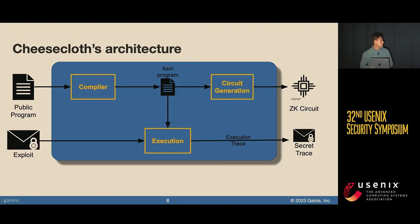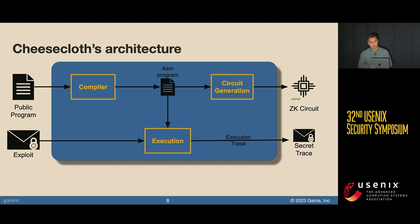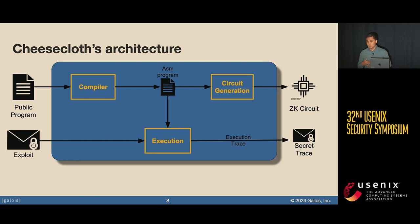Here's the high-level architecture of Cheesecloth. On the left we take as input a public program and a secret exploit or payload that triggers the vulnerability. We compile the program to an assembly representation we call micro RAM, then compile that into a zero-knowledge circuit. We also interpret the micro RAM program with the exploit to generate a trace of execution, which we use to generate the witness as valid input to the zero-knowledge circuit.